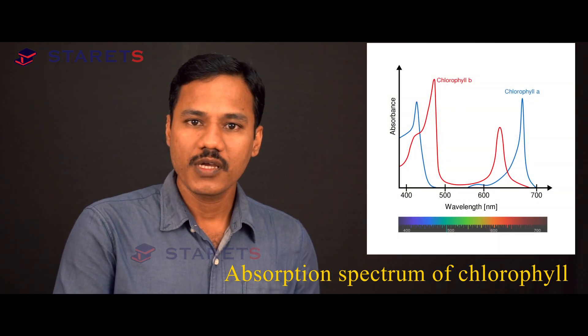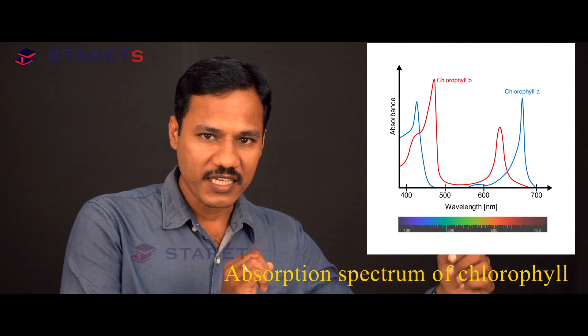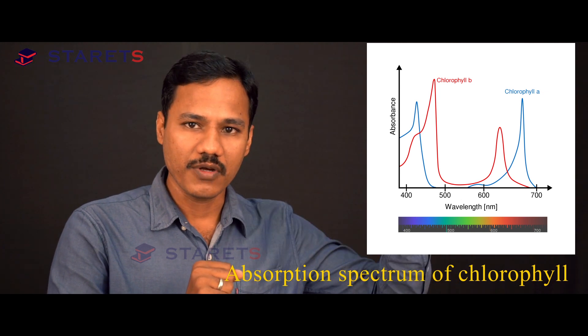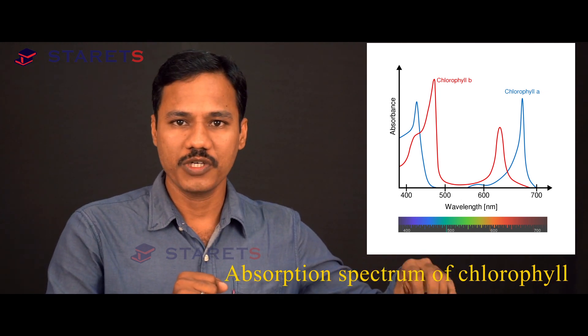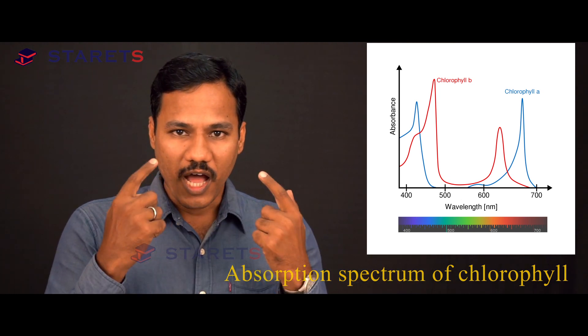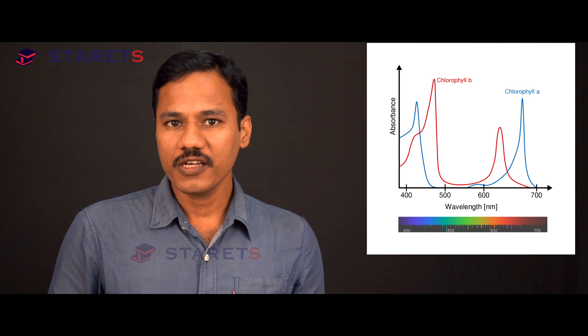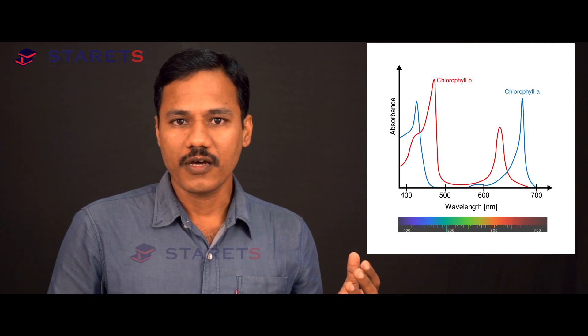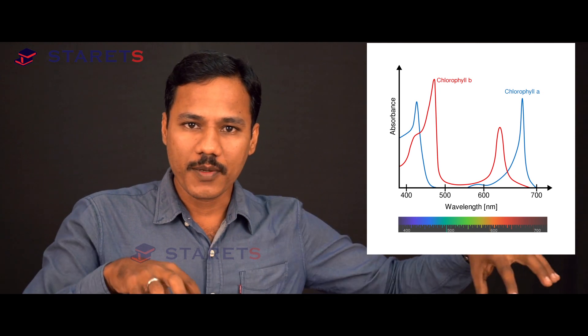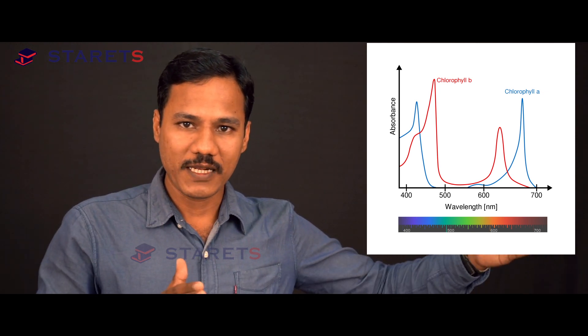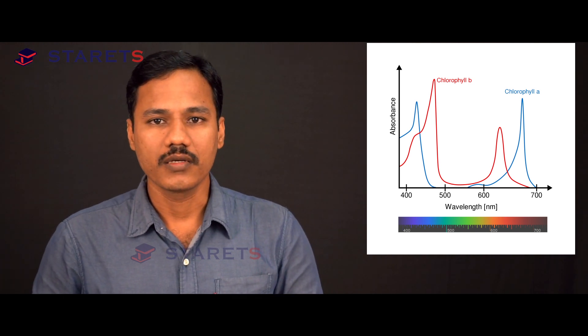These pigments absorb light in the blue region as well as in the red region. The middle region — green to yellow light — is not absorbed; it is completely reflected. Our eye perceives only the light which is reflected from an object. So the chloroplast contains chlorophyll, and chlorophyll reflects the green color, which is in the center portion of the visible range, while it absorbs blue and red light — that is why it appears green. So if you are asked which wavelength is responsible for photosynthesis, you must say either blue or red. You should not say green.